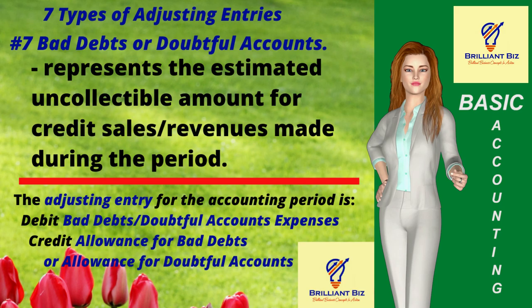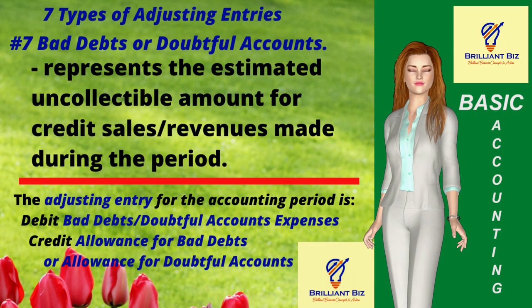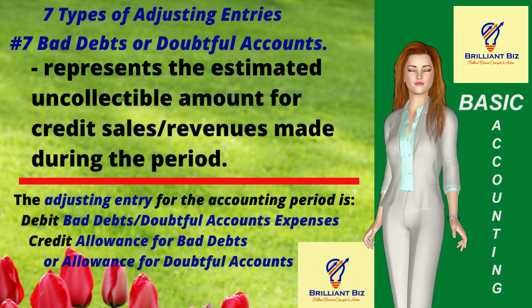Seven: bad debts or doubtful accounts. These represent the estimated uncollectable amount for credit sales revenues during the period. The adjusting entry at the end of an accounting period is debit bad debts or doubtful accounts expense and credit allowance for bad debts or doubtful accounts. The allowance for bad debts or doubtful accounts represents the total estimated amount that the company will not be able to collect from its total accounts receivable.